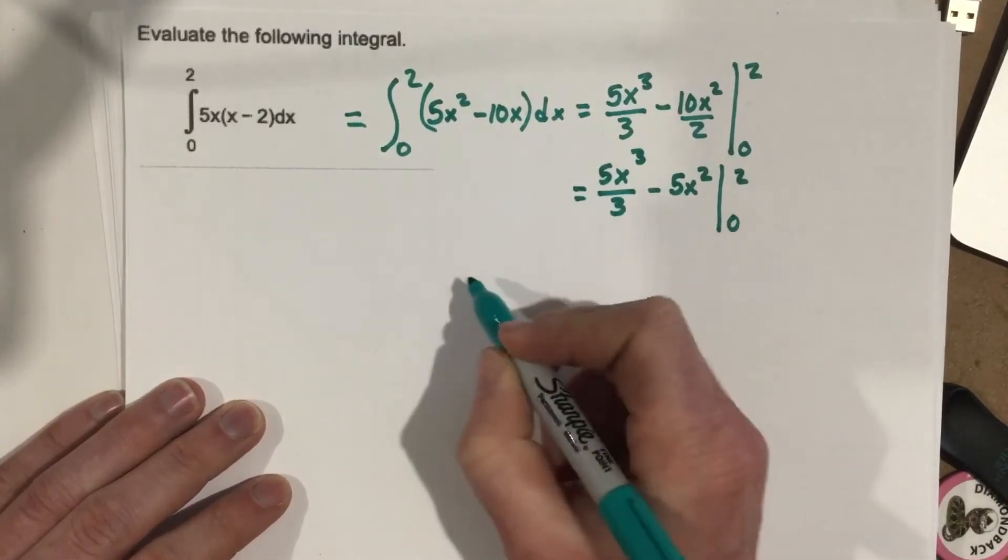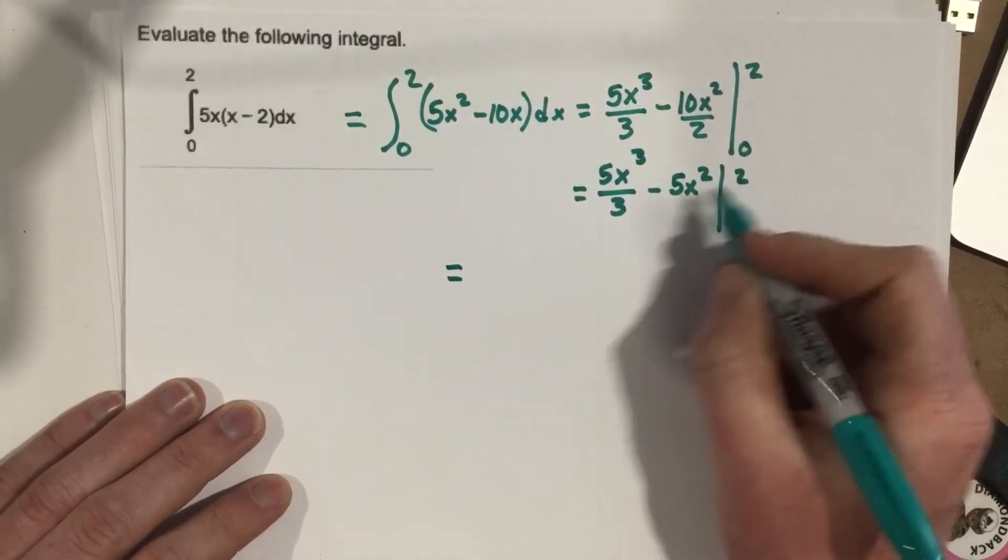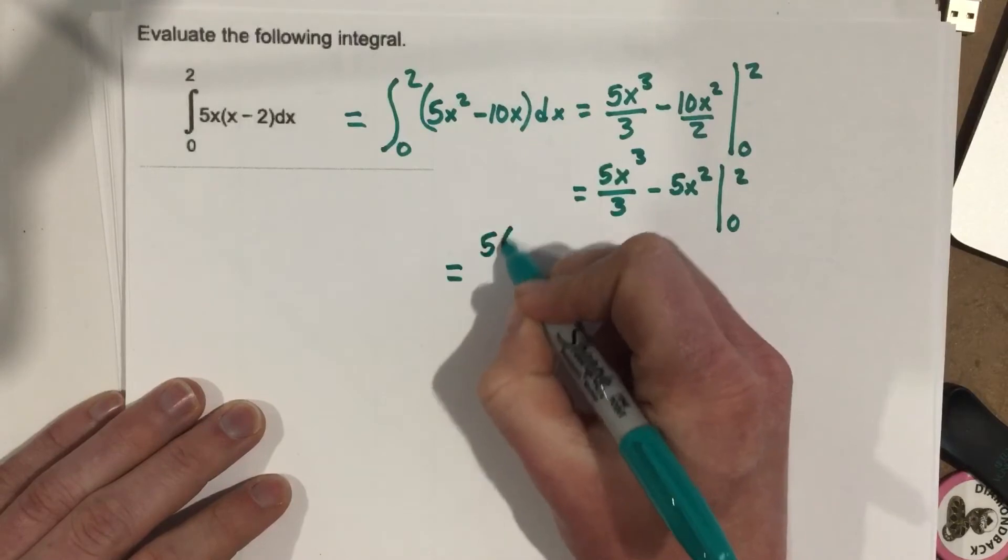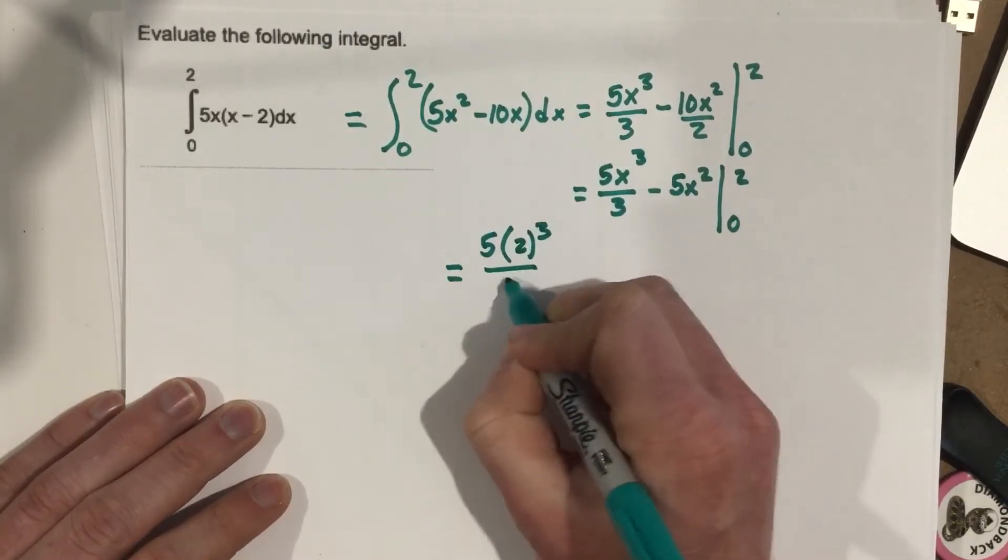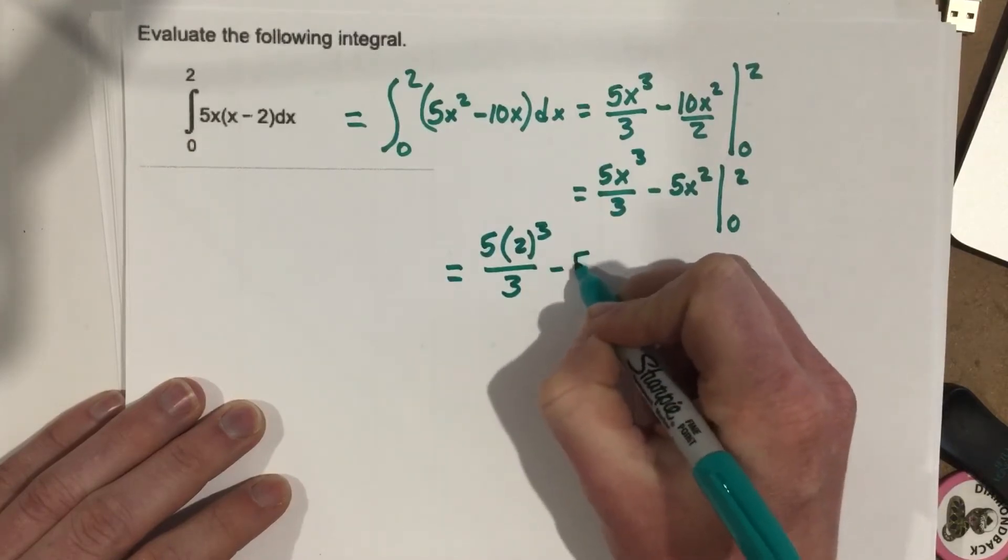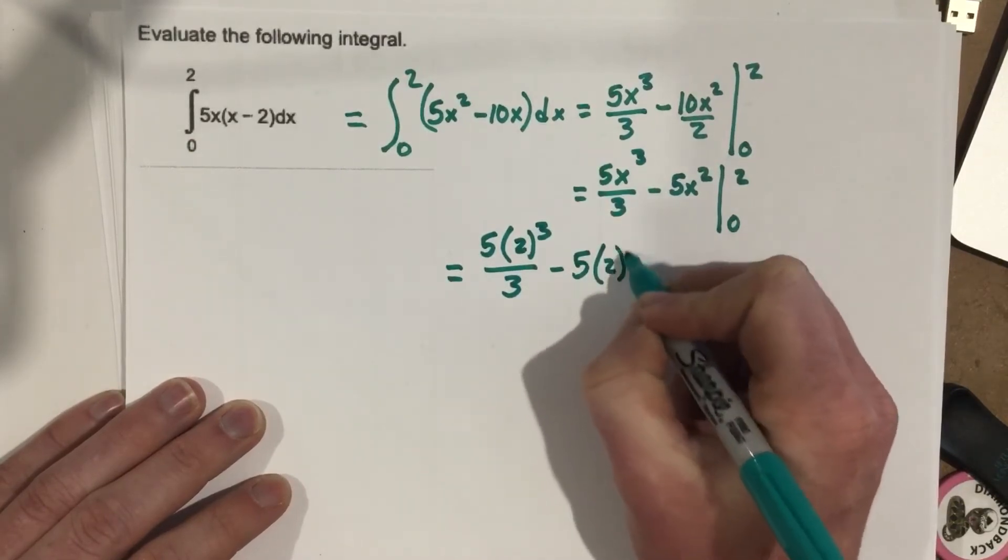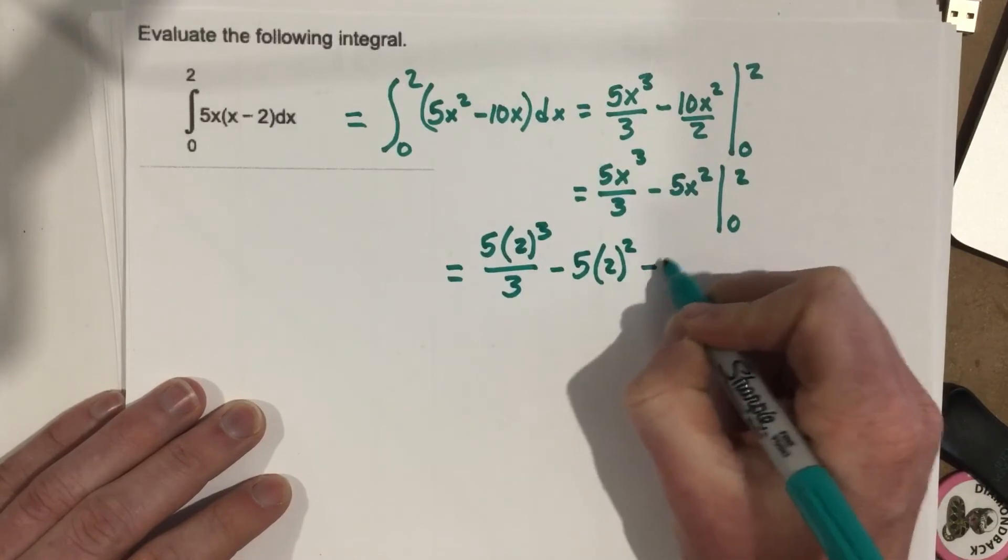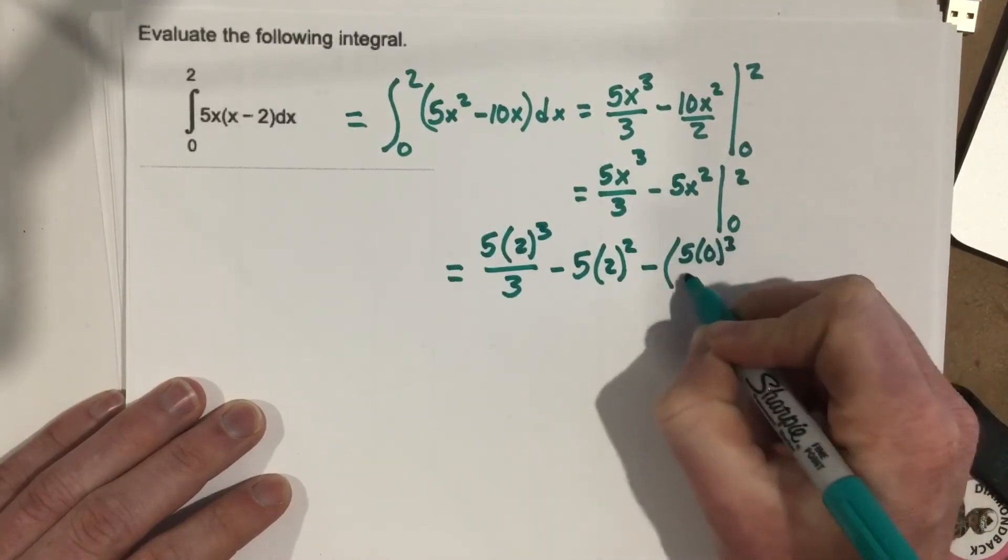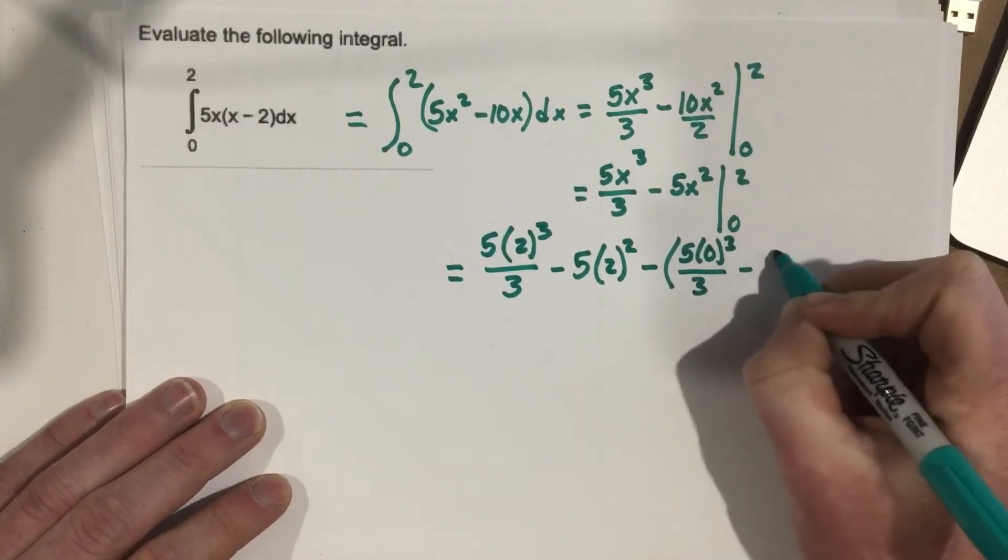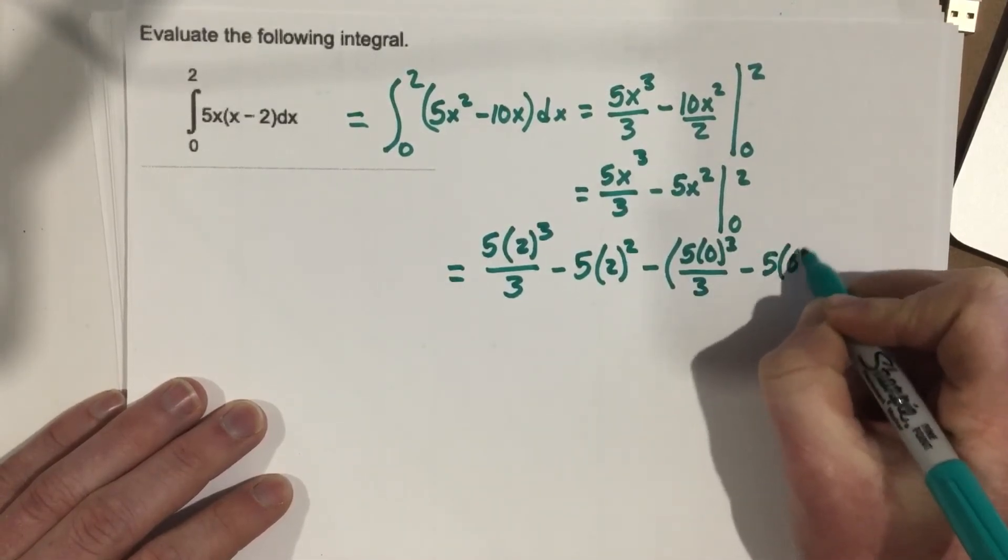Now let's go ahead and plug in the 2 and the 0. So 5 times 2 cubed over 3, minus 5 times 2 squared, minus 5 times 0 cubed over 3, minus 5 times 0 squared.